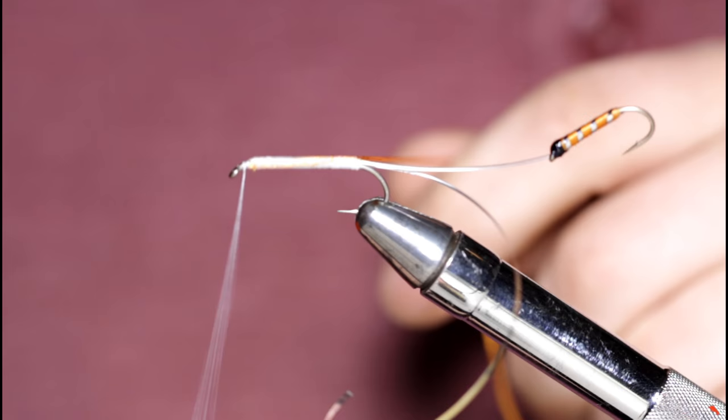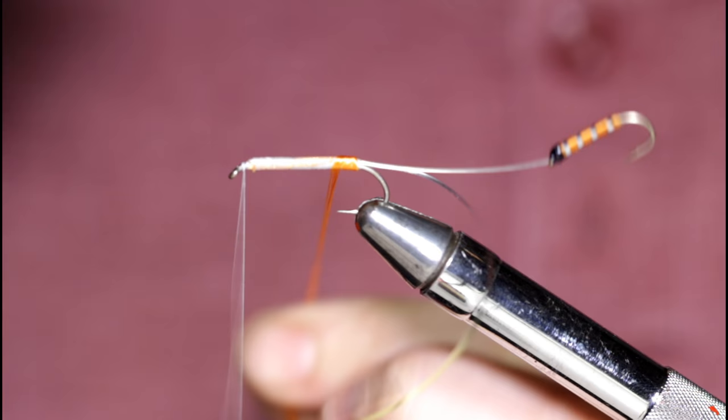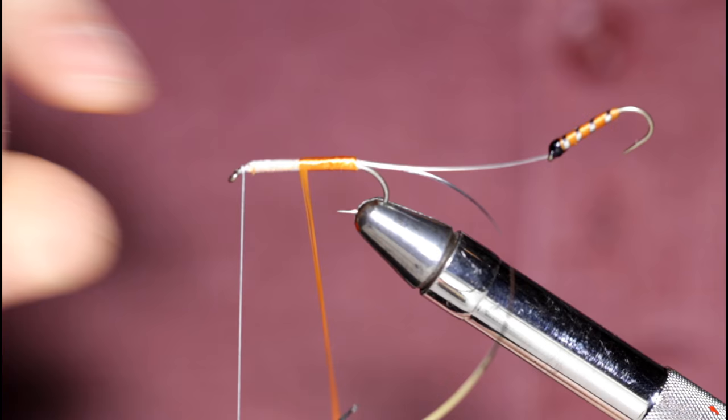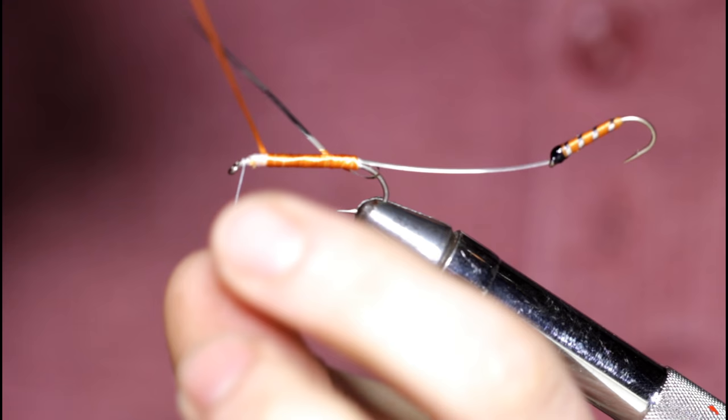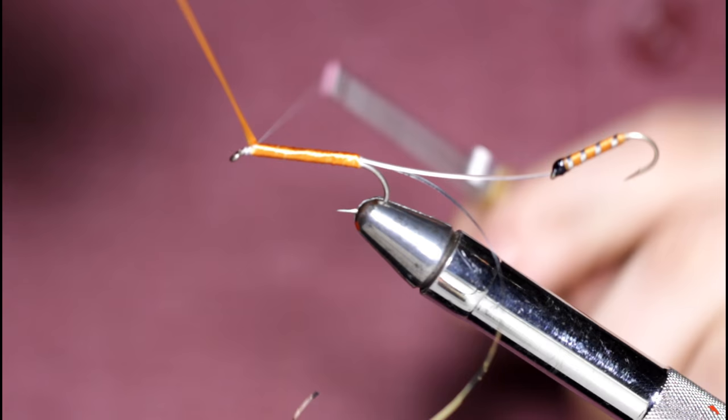Now I'm going to wind my floss here, taking, wind this towards the hook eye and touching turns. And I'm actually letting go of this floss every turn. I'm not just continuing to hold onto it and wind and wind and wind, because that would create a rope. By letting go and catching it with the other finger every turn, that just helps to keep the floss flat.